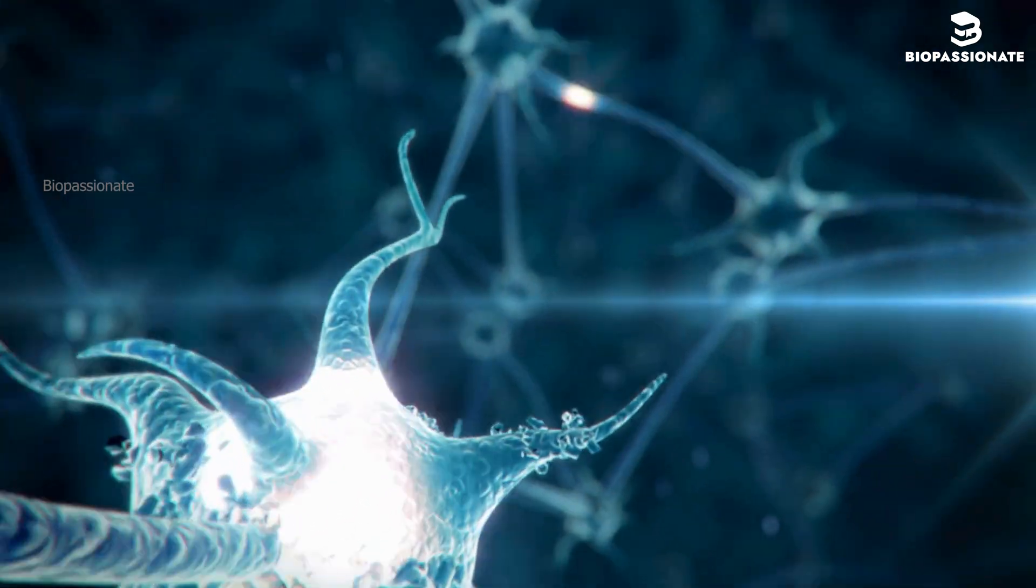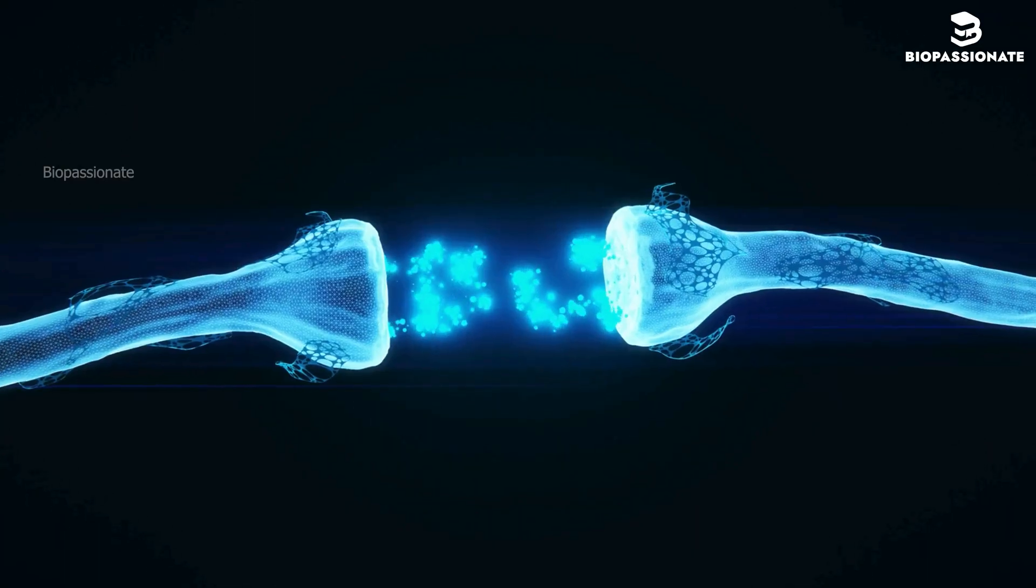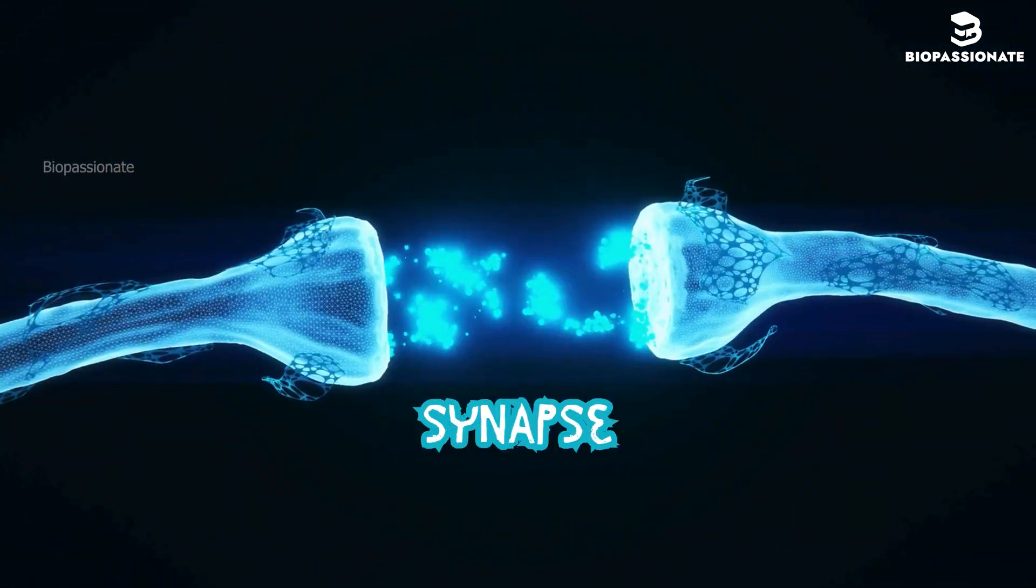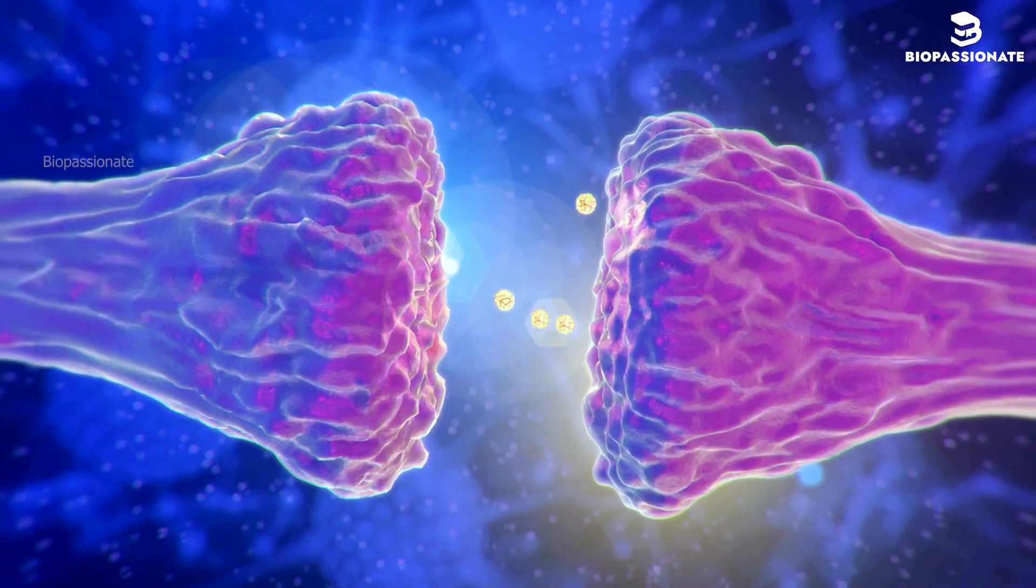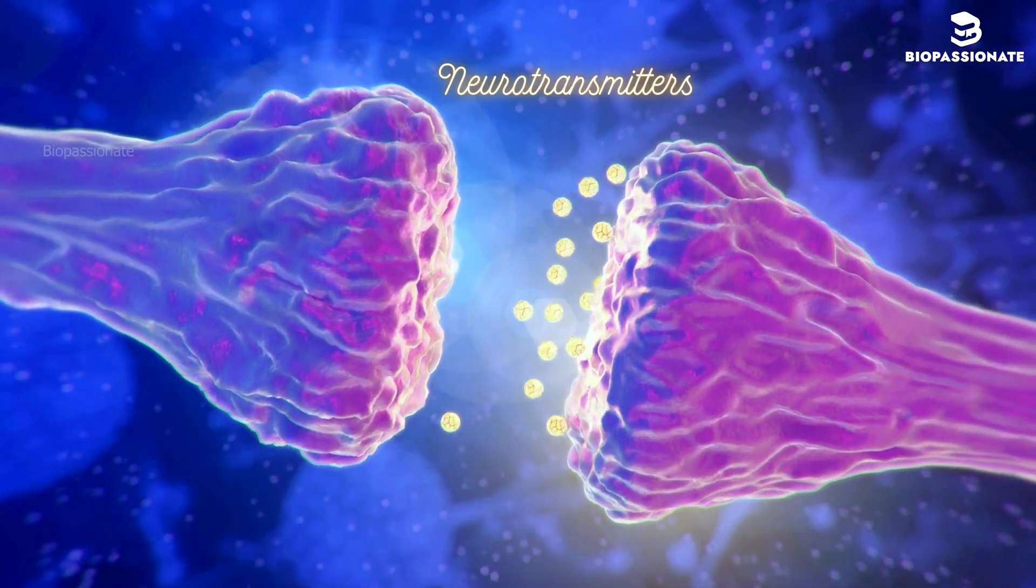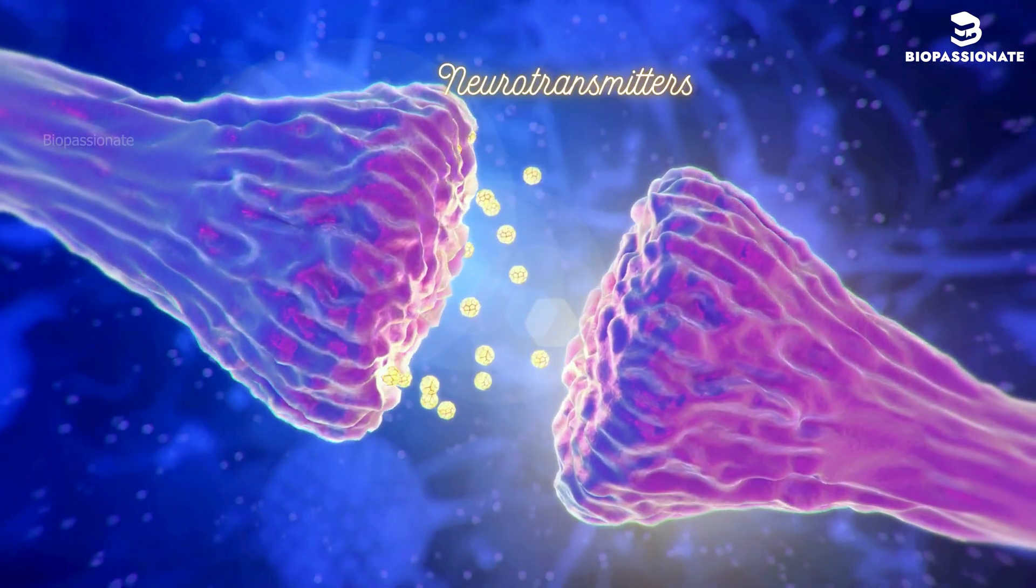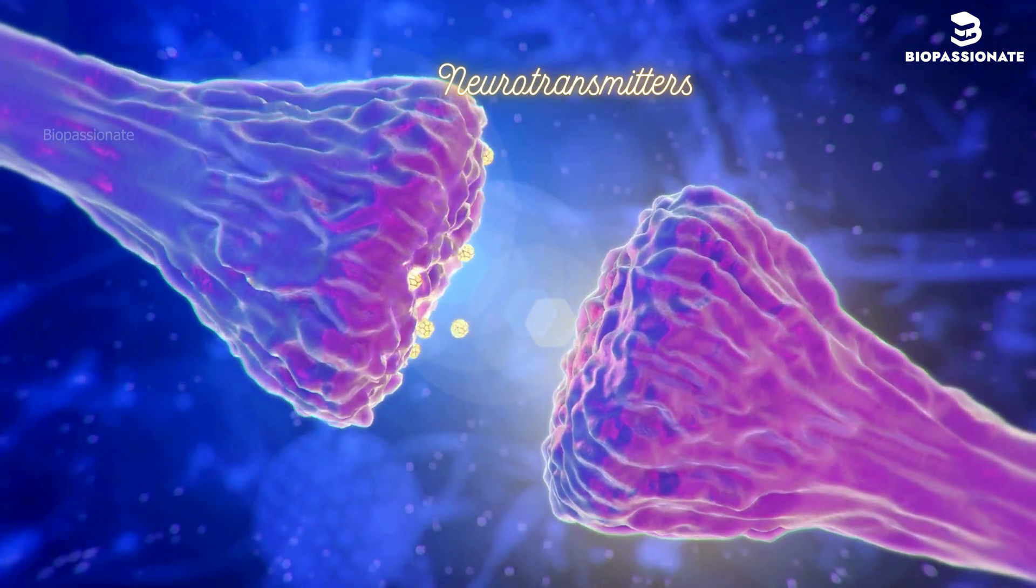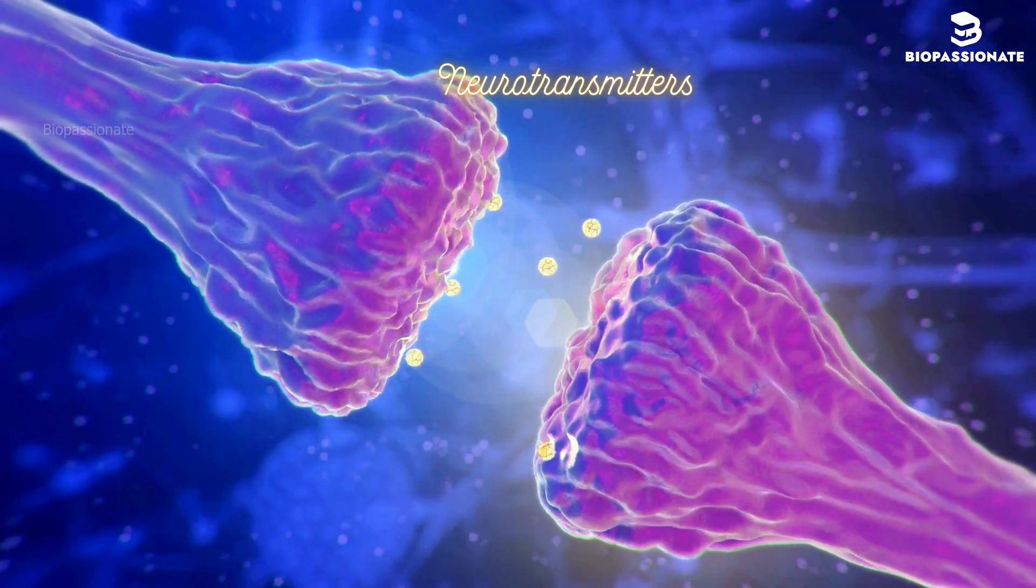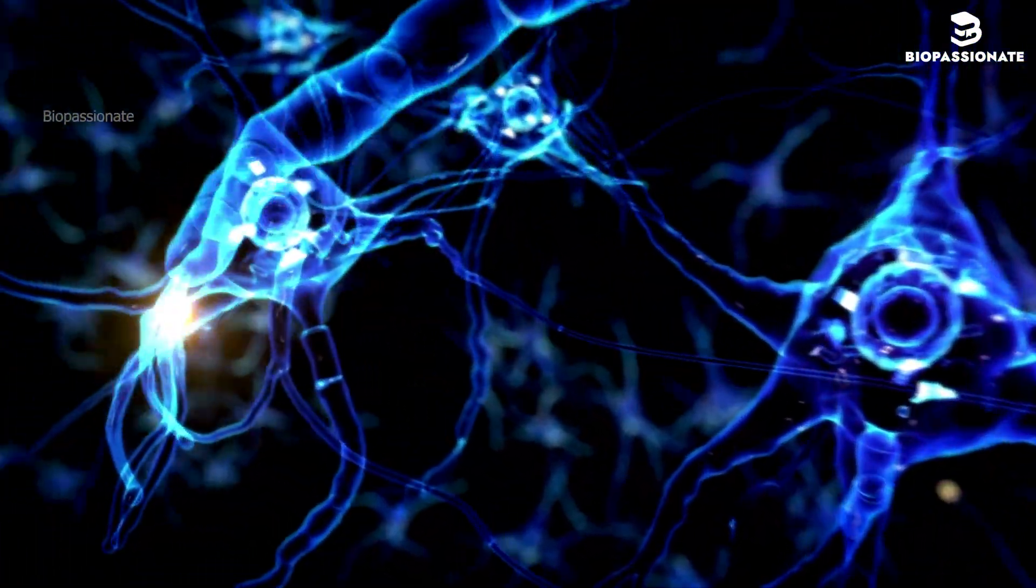Now, how does the signal pass from one neuron to another, or from a neuron to a muscle? This happens at a junction called the synapse. At the end of the axon, the impulse triggers the release of chemical messengers called neurotransmitters from tiny sacs called vesicles. These neurotransmitters cross the synapse and bind to receptors on the next neuron or muscle cell. If the signal is strong enough, it triggers a new action potential in the next cell.